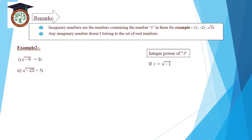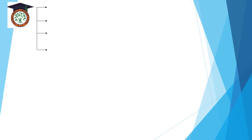The integer powers of i: i equals square root of negative 1. Then i² equals square root of negative 1 times square root of negative 1 equals negative 1. Then i³ equals i² times i equals negative 1 times i equals negative i. i⁴ equals i² times i² equals negative 1 times negative 1 equals 1.